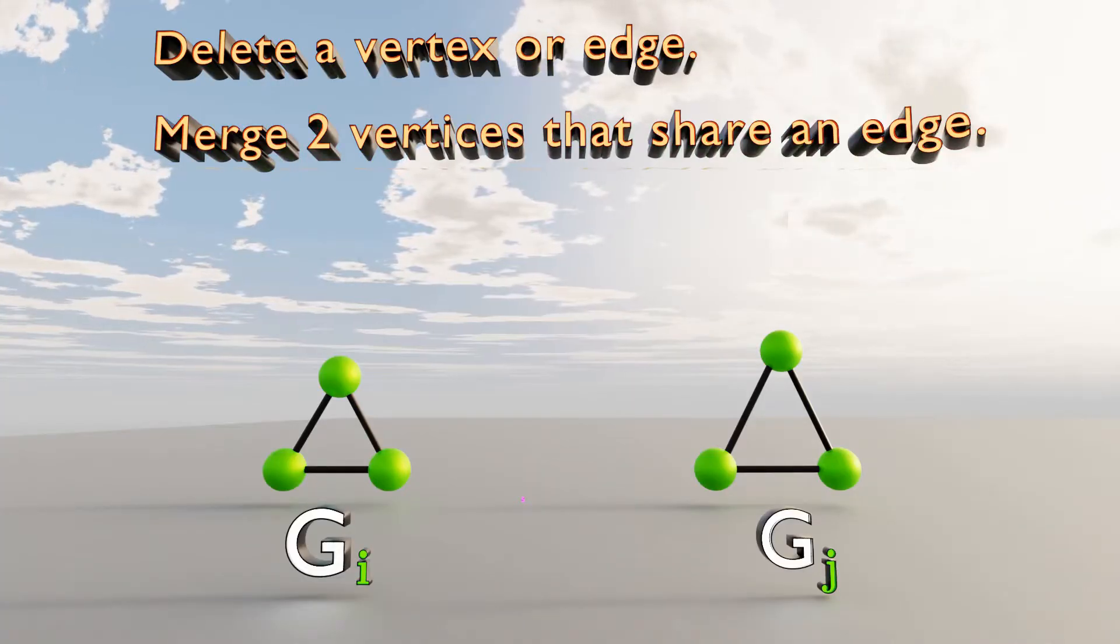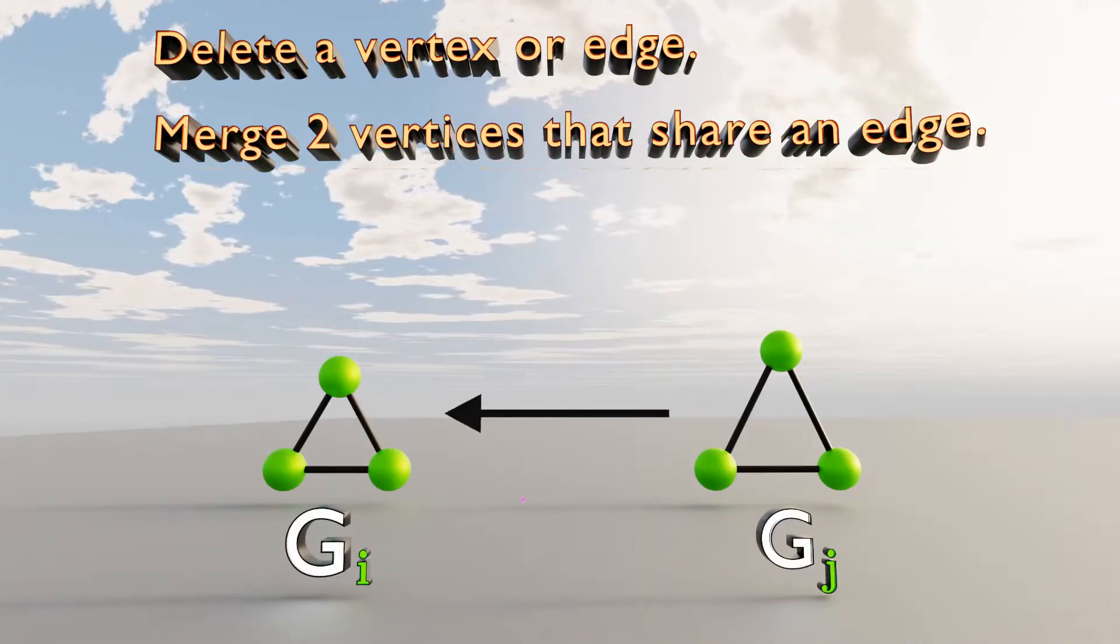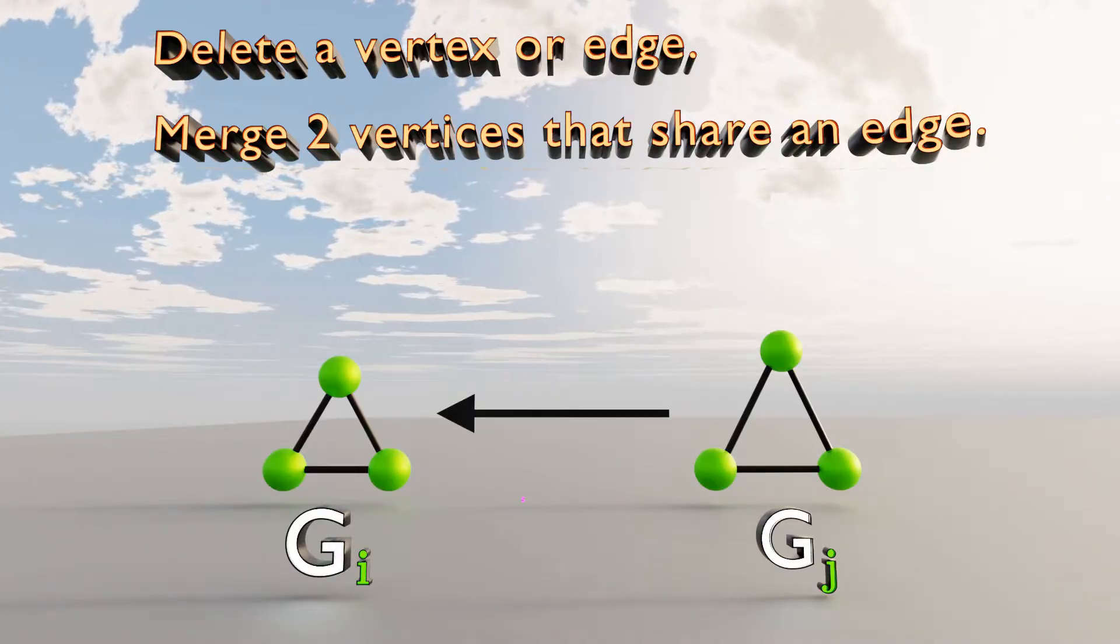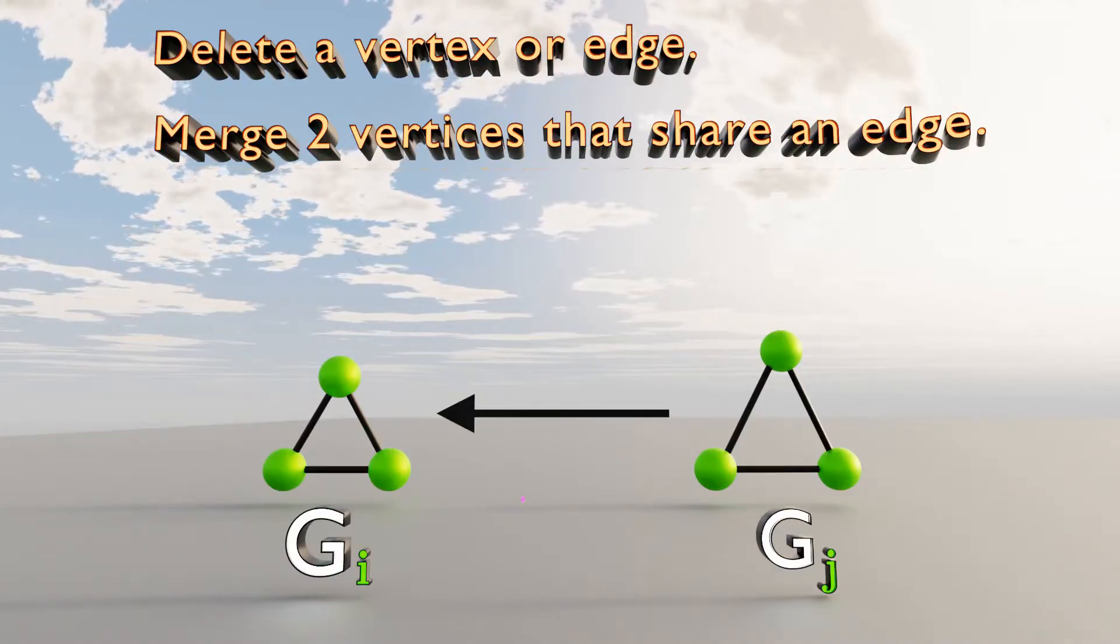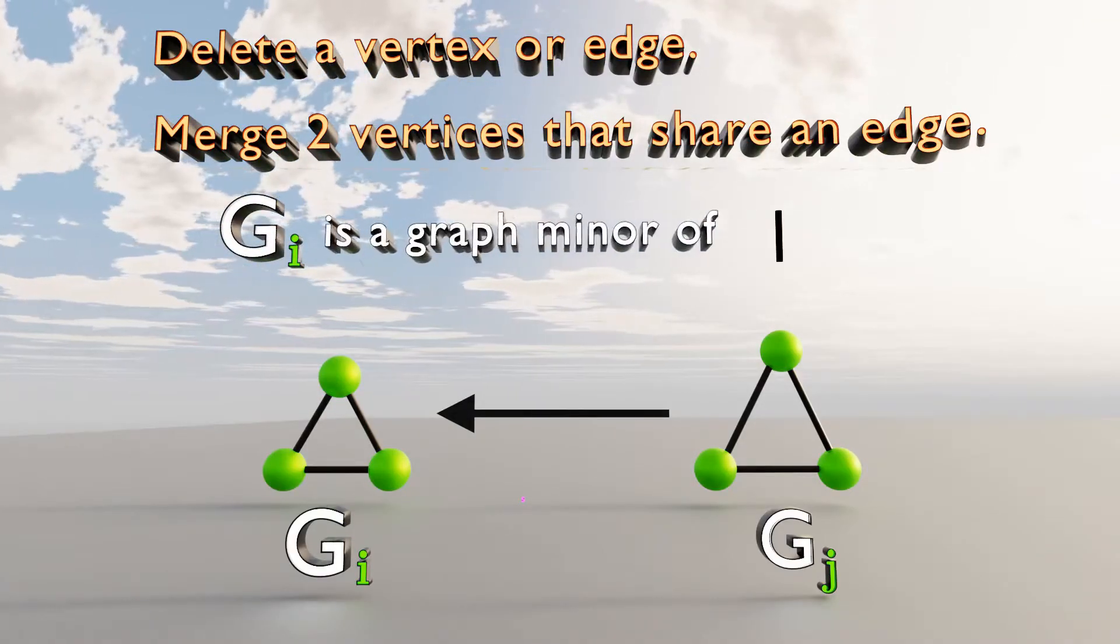As you can see, graph number J is now converted to graph number I. So we can say that graph number I is a graph minor of graph number J.